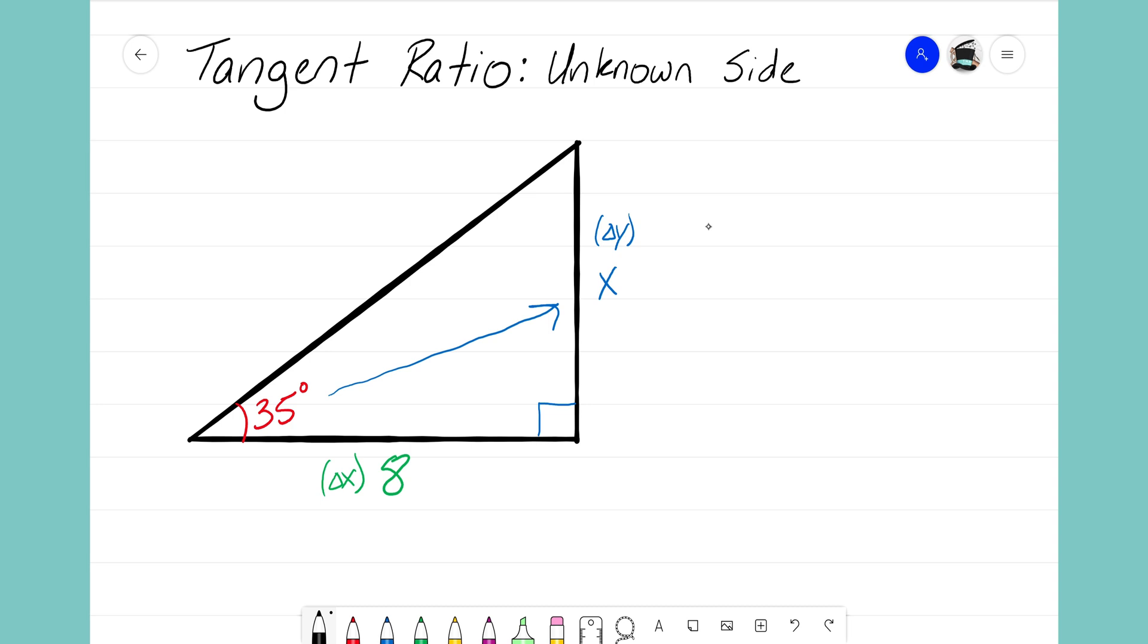So from our previous video we learned that we can set up the tangent of our angle. In this case our angle is 35 degrees, so I'm going to write tangent of 35 degrees equals the slope of this triangle. Now remember slope is just delta y over delta x.